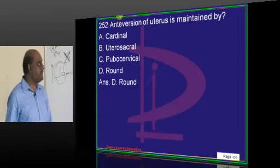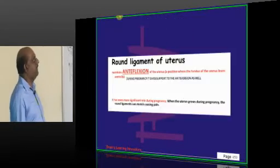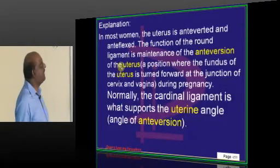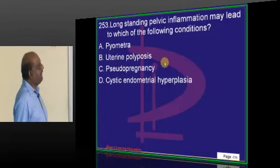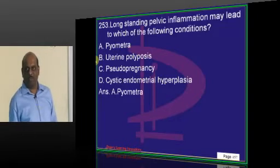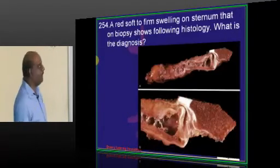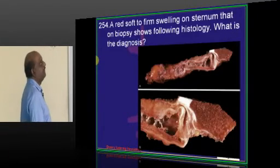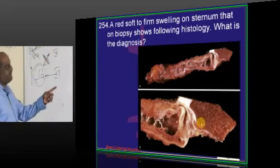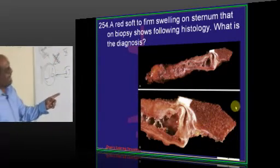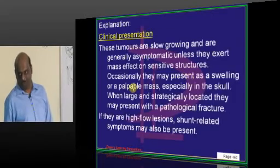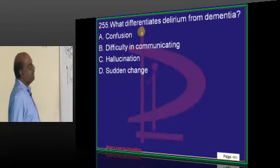Anteversion of the uterus is maintained by the round ligament. Pelvic inflammatory disease in the long run leads to insufficiency of pus and development of pyometra. The red soft swelling seen on biopsy of the sternum is a classical gross appearance of a hemangioma.